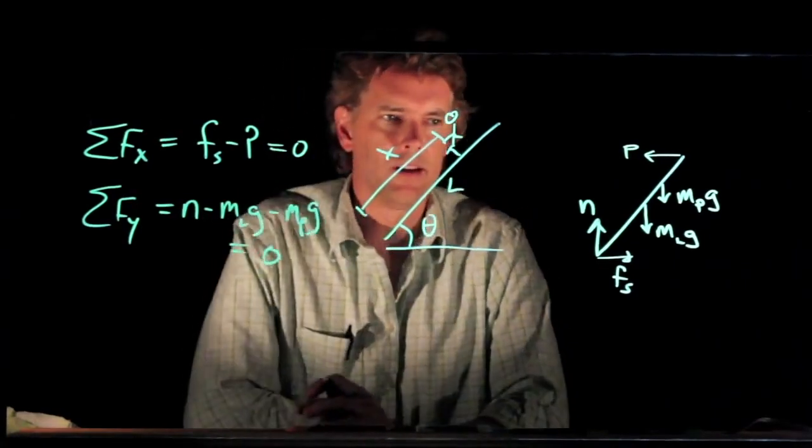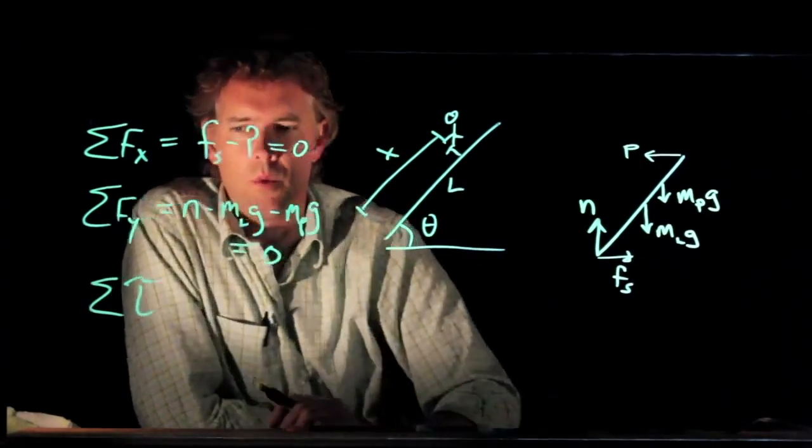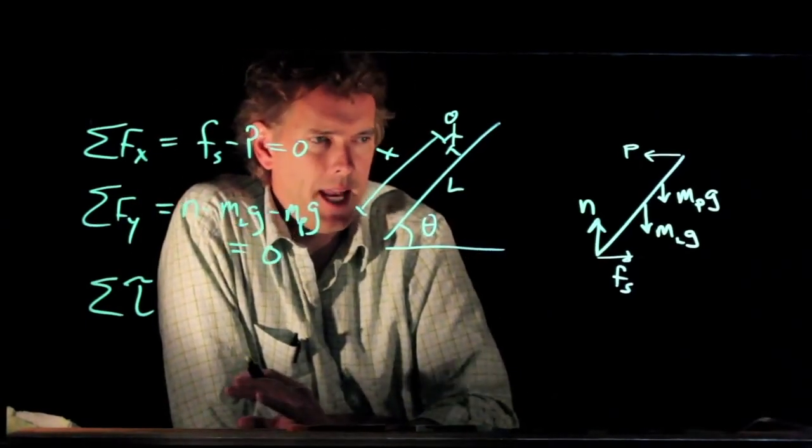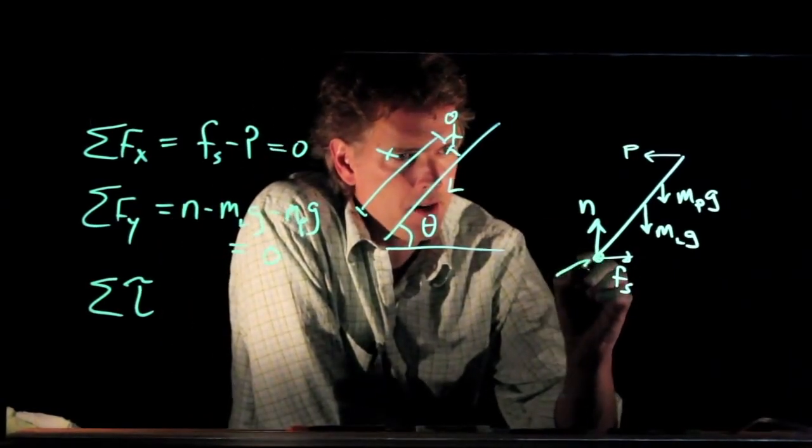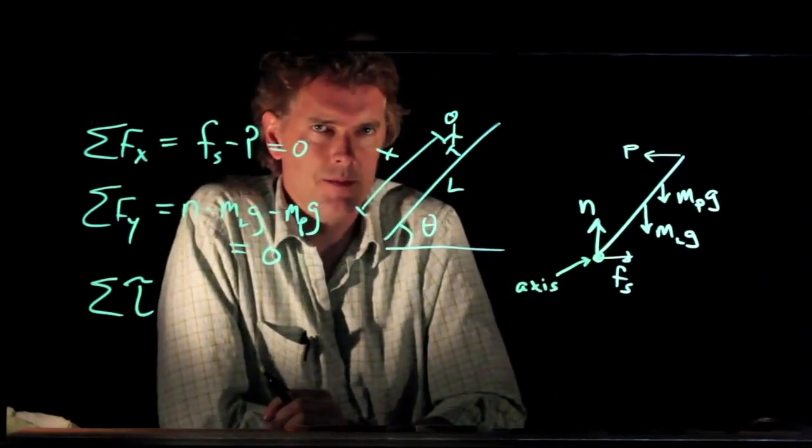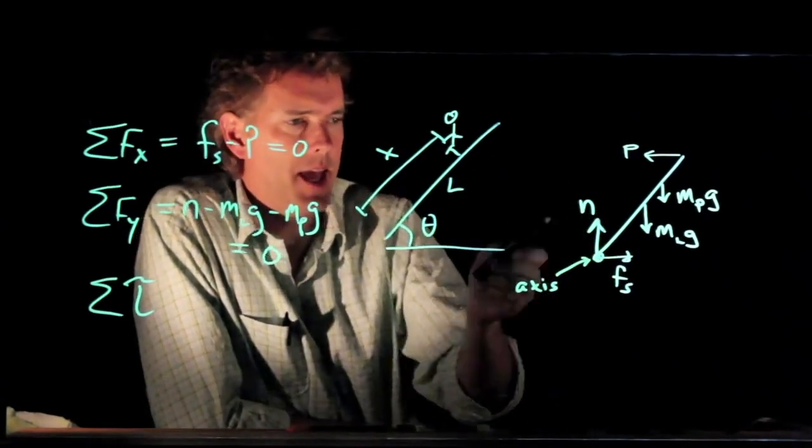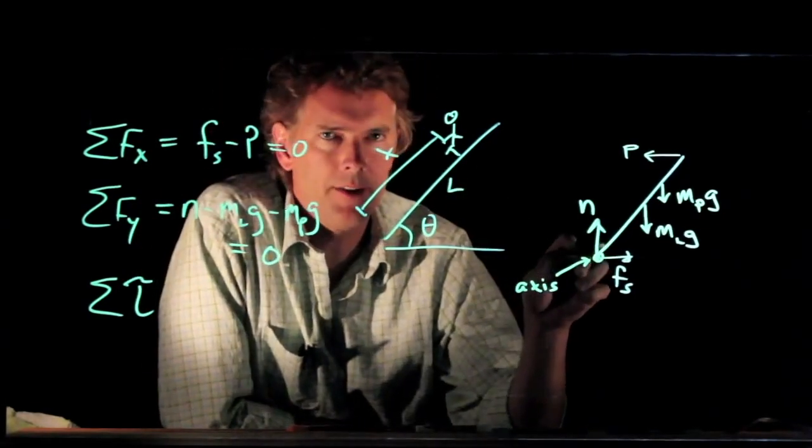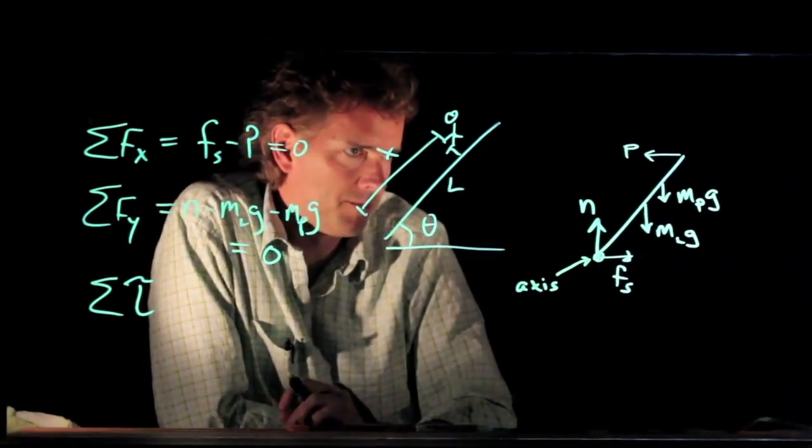The hard part of the problem is identifying all the torques. Now, when you write down some of the torques, you have to immediately pick an axis of rotation. So let's pick this point right here at the ground as our axis of rotation. By doing that, we immediately eliminate n and F sub s from our torque equation because they don't have any lever arm. They go right through the axis of rotation. But what about all these other forces?